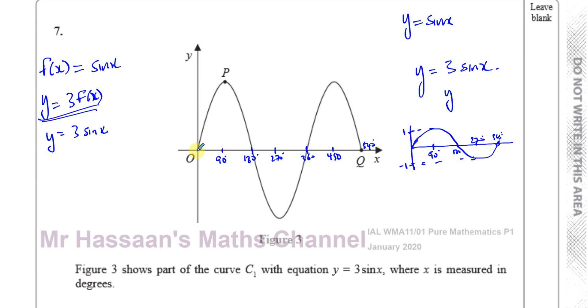The only things that are going to change are the y values multiplied by 3. For example, 0,0 will stay where it is. But the coordinate that was (90, 1), the y coordinate is going to be multiplied by 3, so this is going to be (90, 3). Similarly, (270, -1) is going to be (270, -3). We can see here that the coordinates of P are 90, 3 and Q is 540, 0.